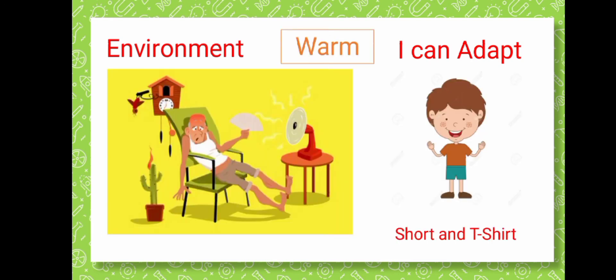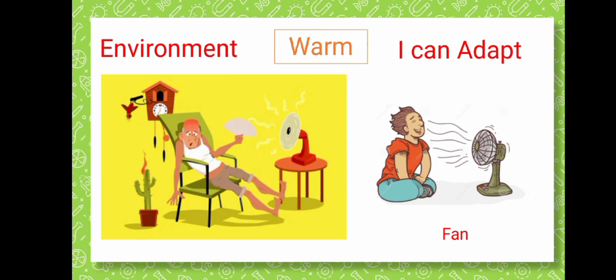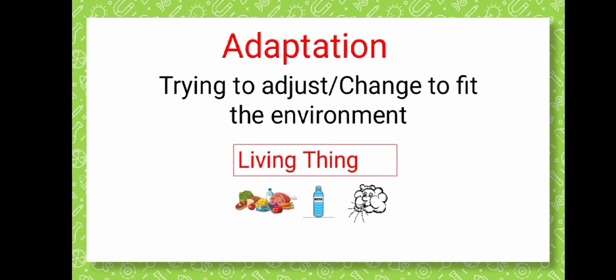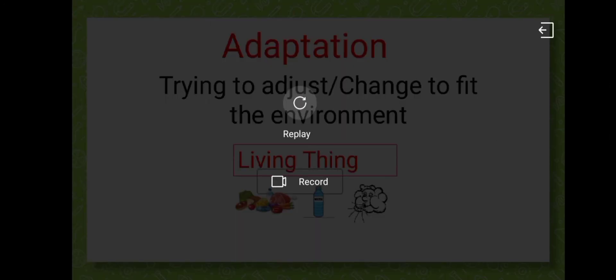What should I do if the environment is too hot and too warm? How can I adapt? I can wear a shirt and a t-shirt, or I can open the fan, or I can drink cold water with ice. So adaptation is trying to adjust and change to fit the environment, and only living things can adapt. Thank you.